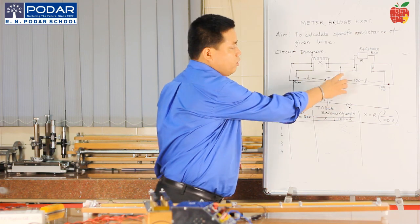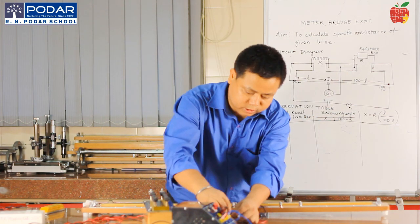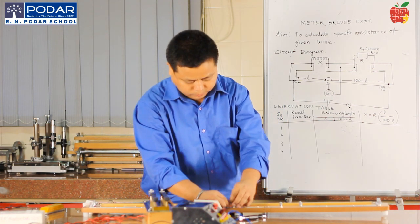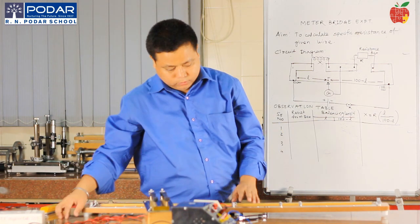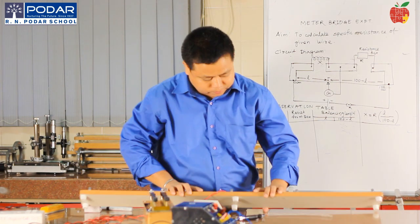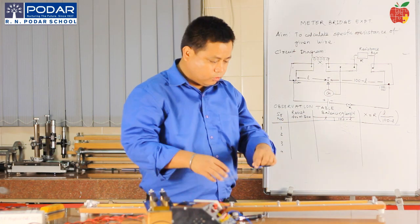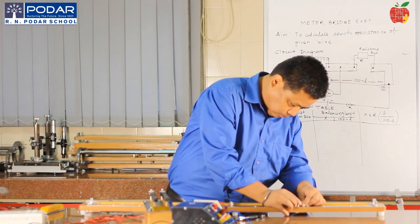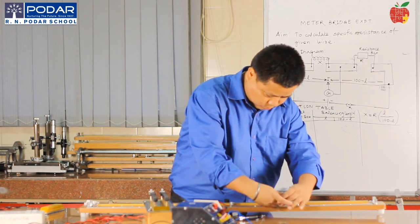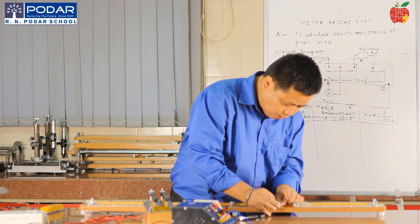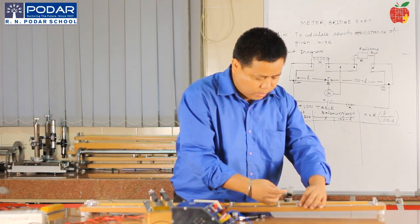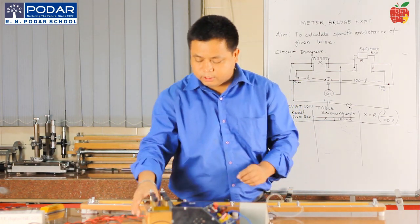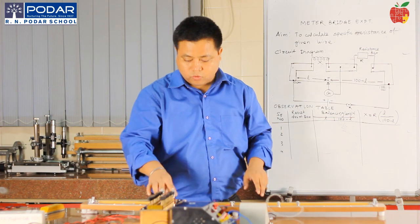The other part of the galvanometer goes to this particular middle point. The manganese wire is connected in the left gap — I will connect the manganese wire over here. We have to calculate the specific resistance of this manganese wire. And the resistance box is connected in the right gap, over here.